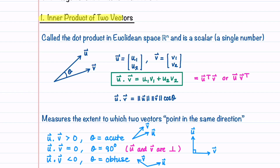Let's begin by talking about the inner product of two vectors. In Euclidean space the inner product is called the dot product and it's a scalar, which is just a single number. If we have two vectors u and v in R2, the dot product is just the corresponding components in u and v multiplied together and added. U dot v can also be written as u transpose v or as u times v transpose.